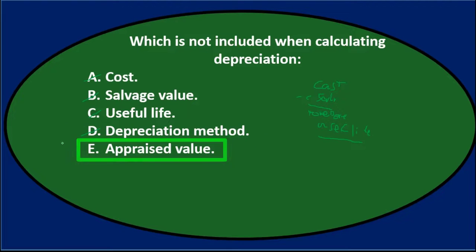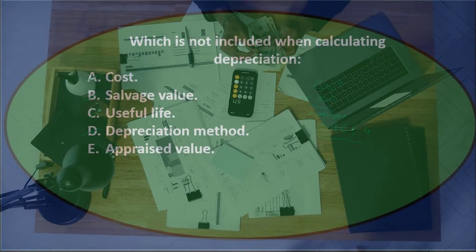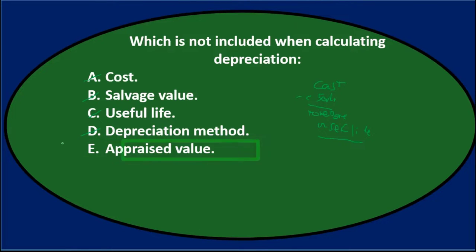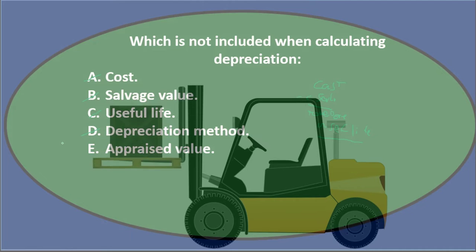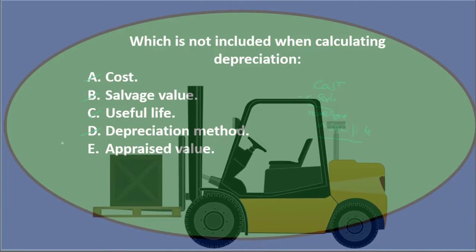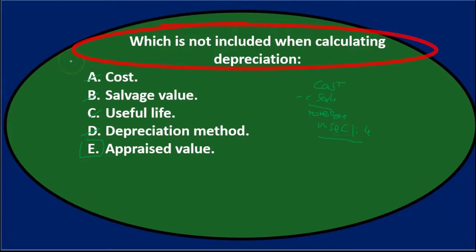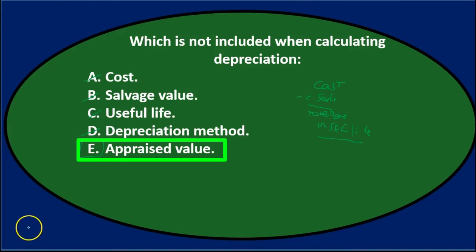Now the appraised value — you might think we need that. In some cases we might use an appraisal, such as a lump sum purchase where we're trying to break it out between land and building. But we don't need the appraised value. If I bought a forklift, the cost is what we're using, not the appraisal value. So the appraisal is not something we would typically need. Final answer: which is not included when calculating depreciation — E: appraised value.